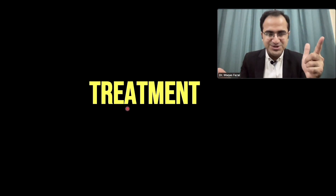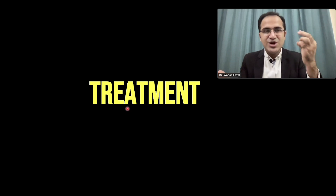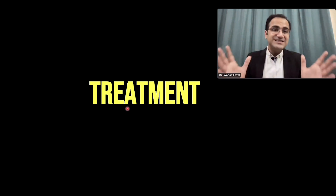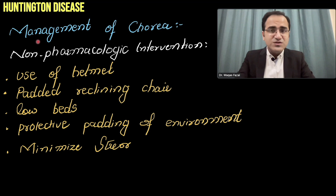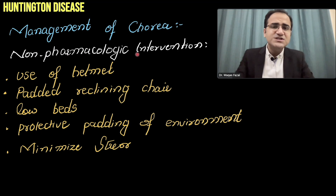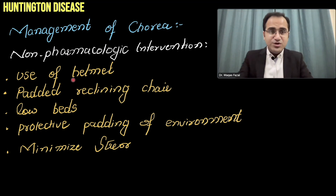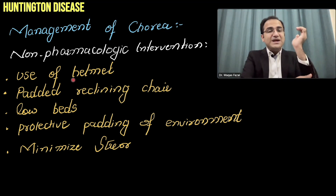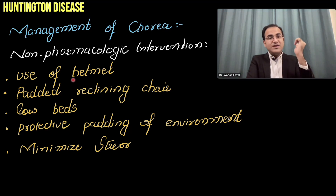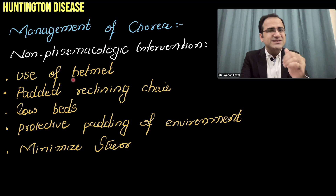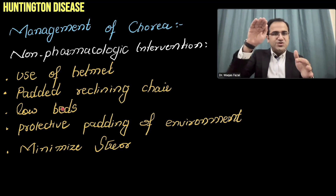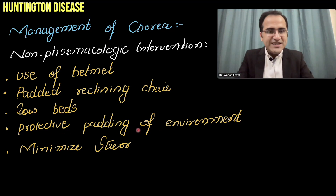Management of Huntington disease requires a multidisciplinary approach: treating depression, agitation, aggression, psychosis, and chorea, while protecting the patient from injury. Non-pharmacological interventions for chorea include helmets to prevent head injury, padded reclining chairs to protect elbows and limbs, and low beds to minimize fall injuries. Protective padding of the environment is also used.